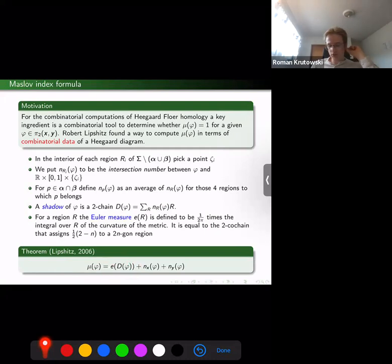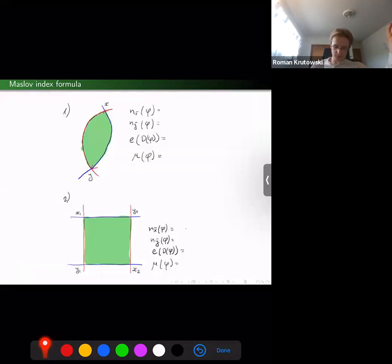Finally, Lipschitz's theorem states that the Maslov index of φ can be computed as the Euler measure of such a 2-chain plus the sum of the coefficients of φ at the generators. Here I want to remark that if one deals with a collection of points x, nx is basically the sum over all points in a given collection.